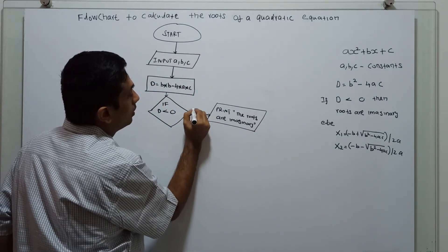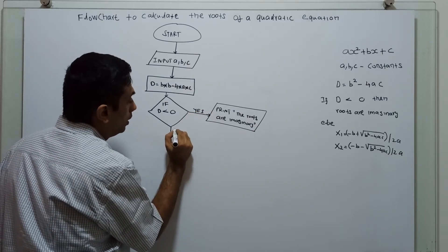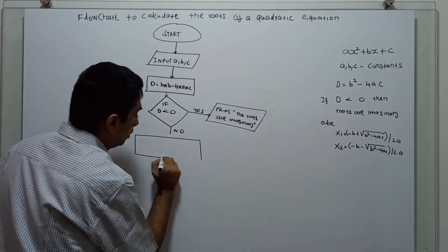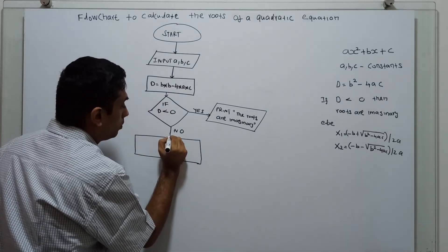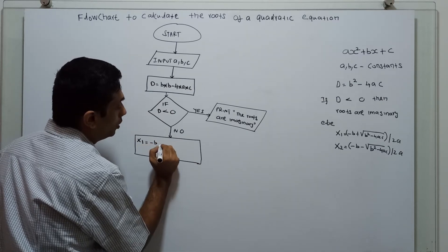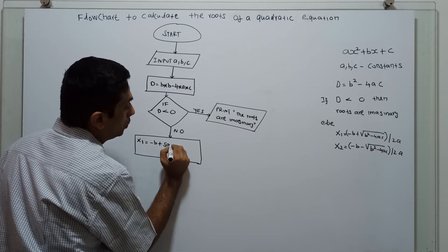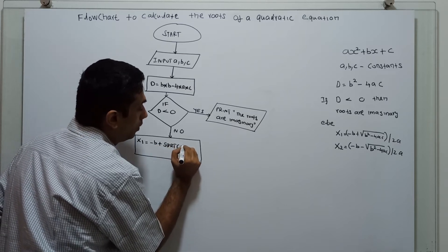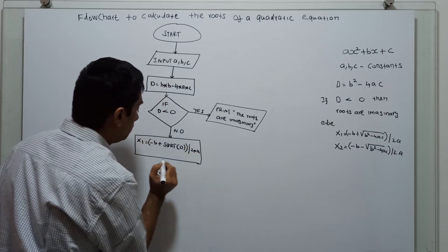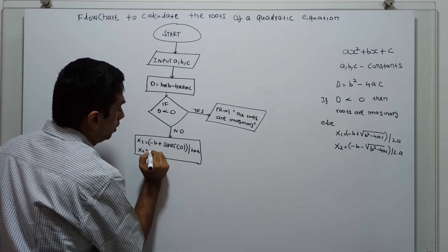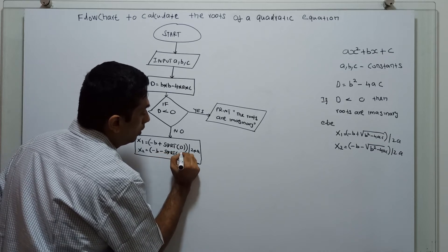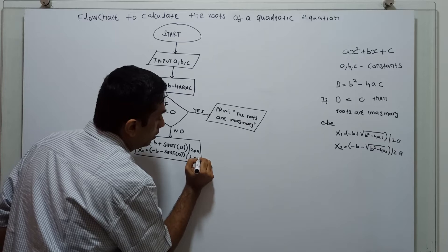If d is less than 0, it is true; otherwise — no — I am calculating the roots of the quadratic equation. x1 equals minus b plus the square root of d, divided by 2 star a. x2 equals minus b minus the square root of d, divided by 2 star a.